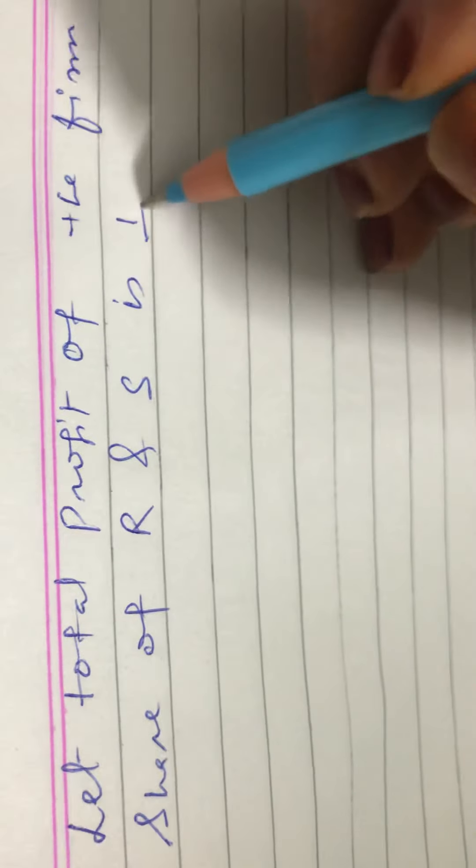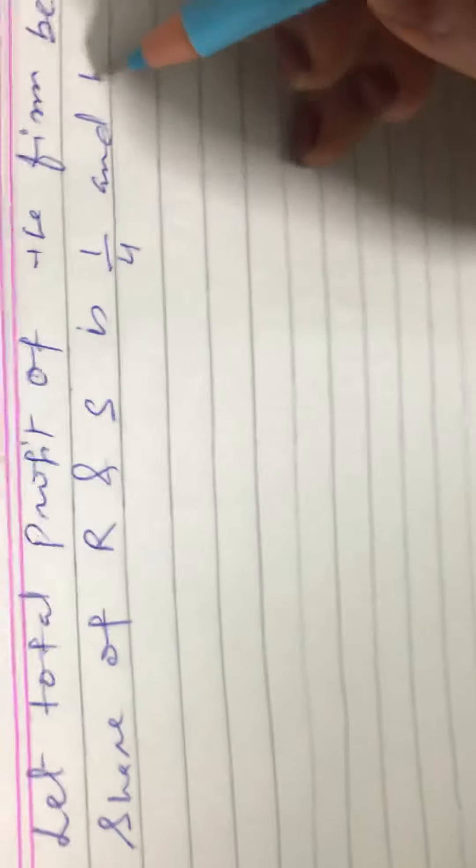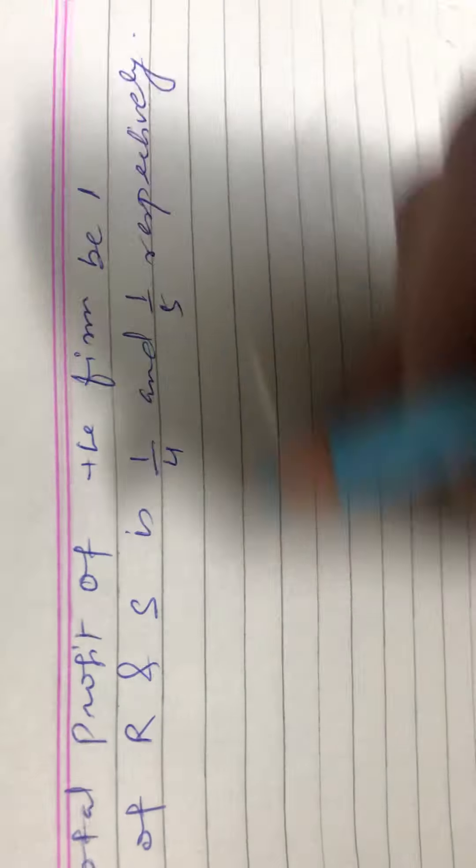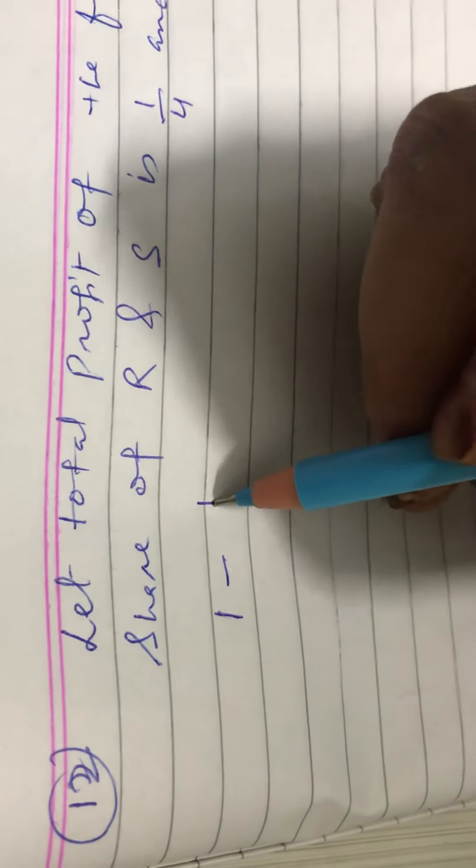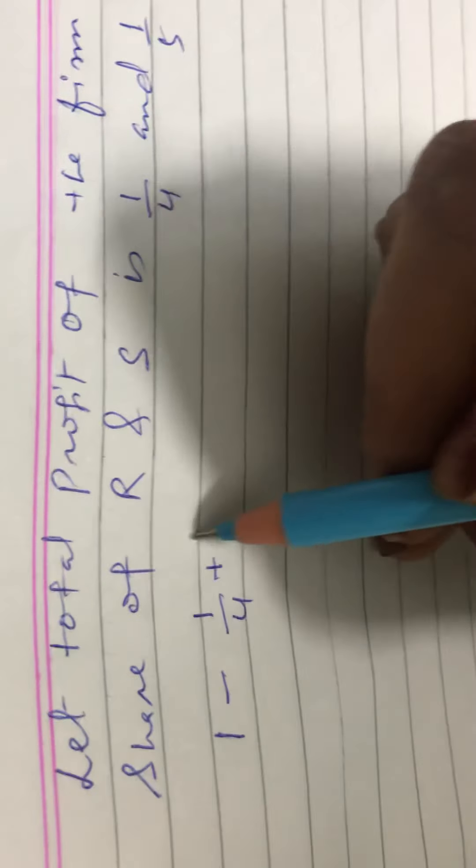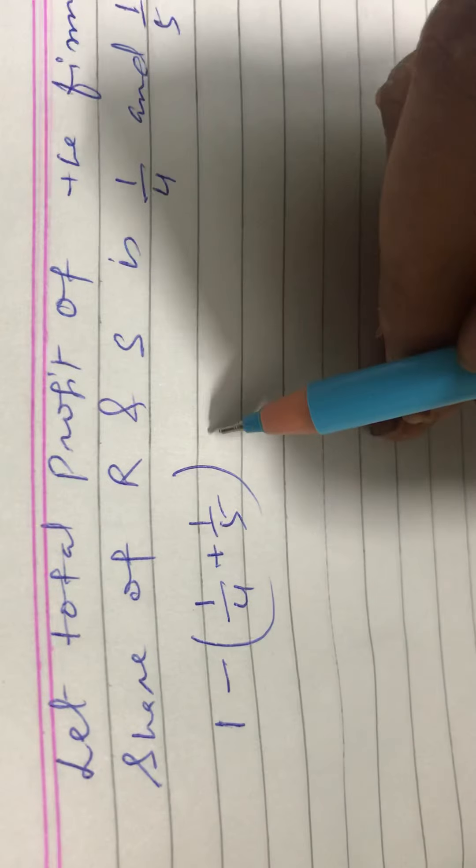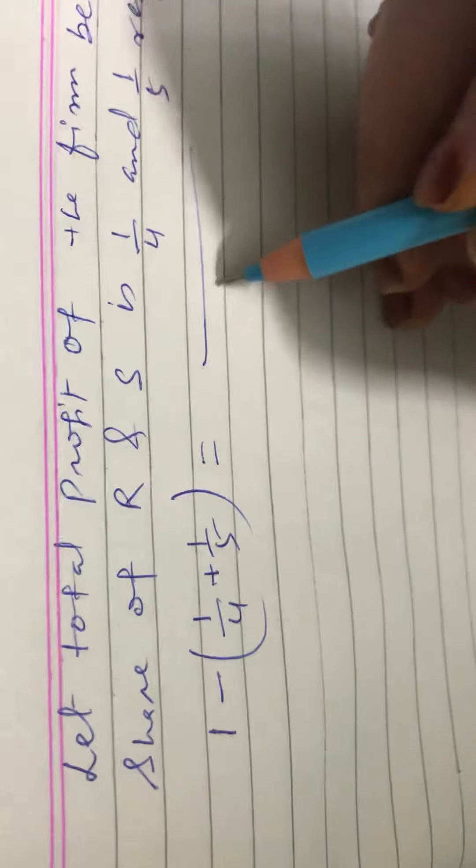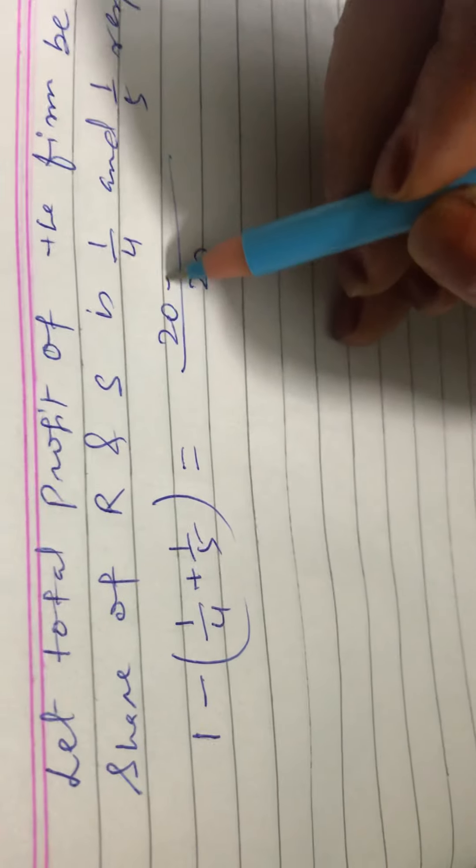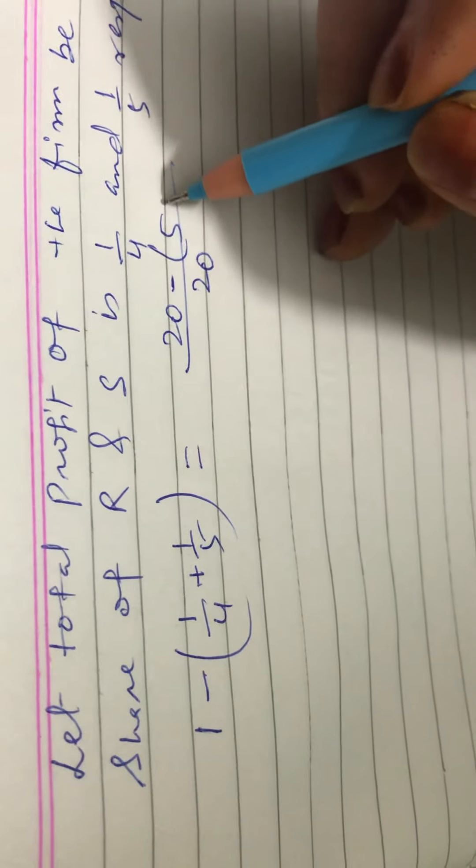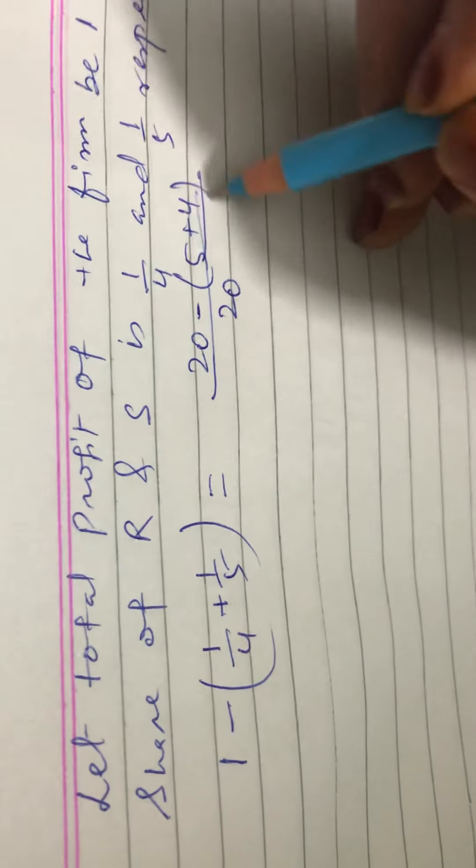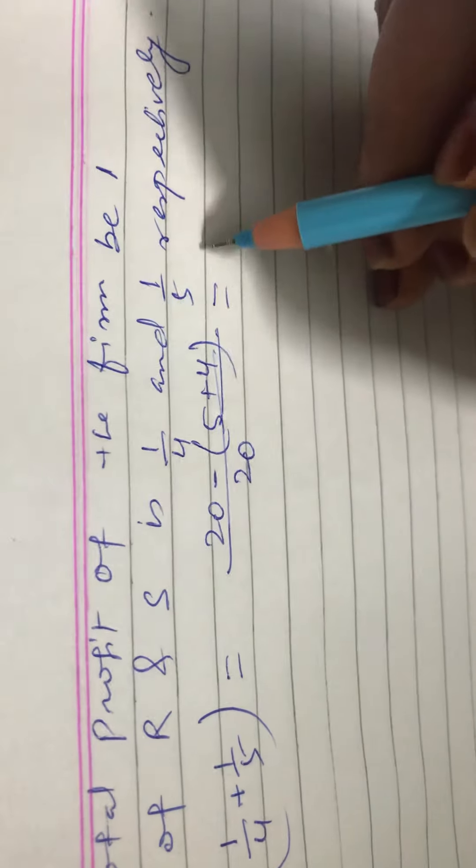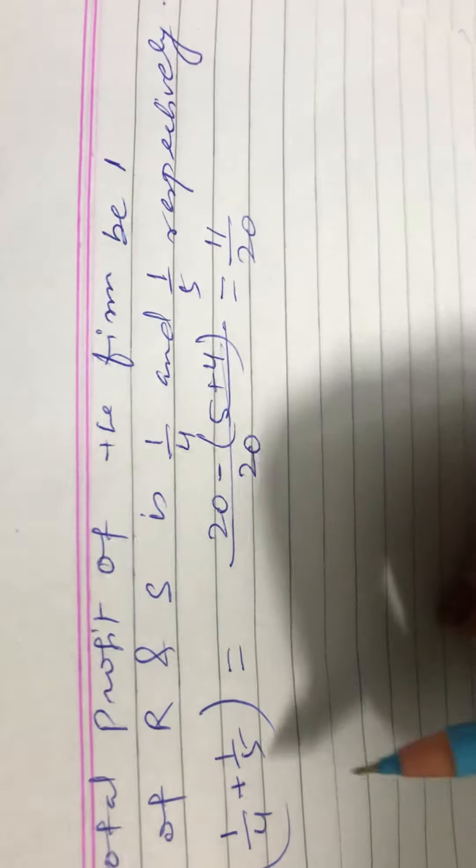So remaining: 1 minus 1/4 plus 1/5, which equals to? 4 times 5 are 20, 20 here, 20 minus, 4 times 5 are 5 plus 4, equals to 20 minus 11, 5 plus 4, 9, 11/20.